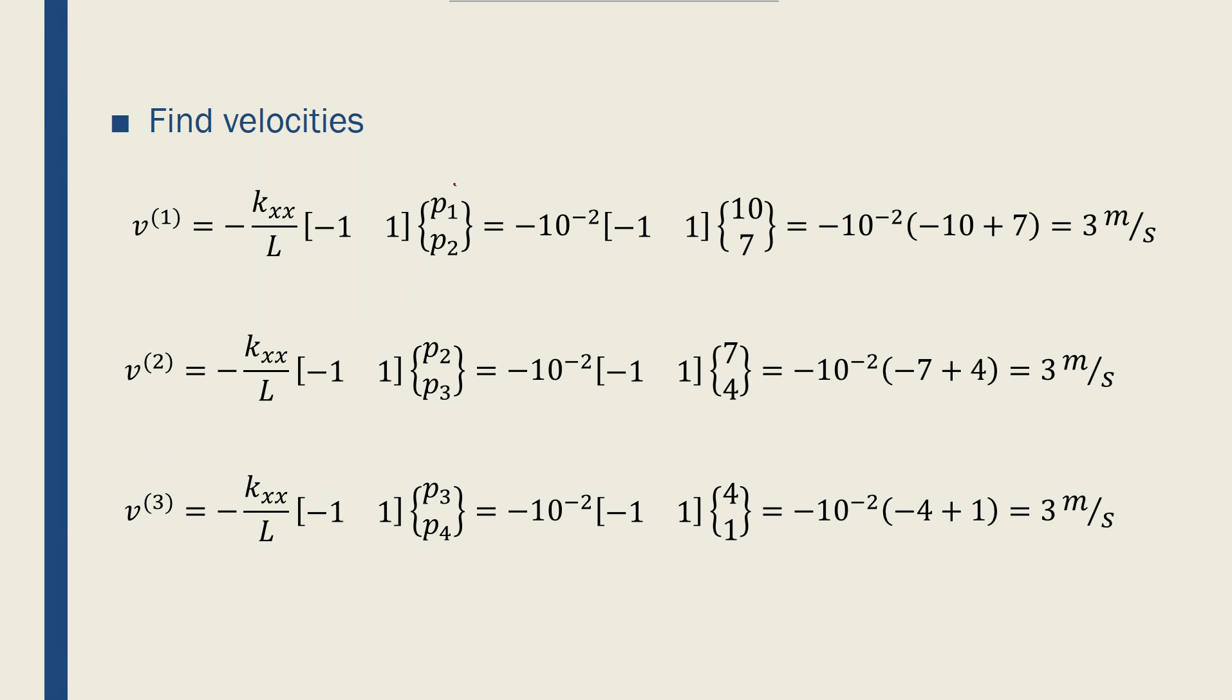Now if I put those potentials in Darcy's equation, I can find the nodal or elemental velocities. So I have the kxx, I have the L per element, I have the potentials per node, and I can find the velocities. What's interesting is that velocities of all the nodes is the same, which is similar when we have a bar in 1D tension and we want to find the stress at each cross section. All the stresses are the same if the cross section is constant along the length of the bar. As a result, the velocity of each element is equal to the velocity of the other elements.